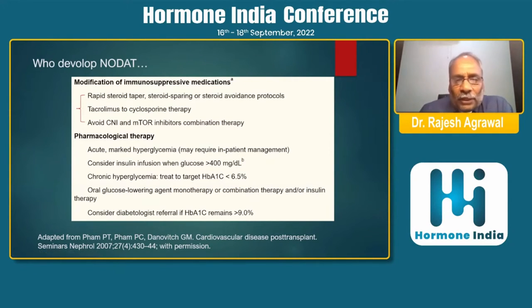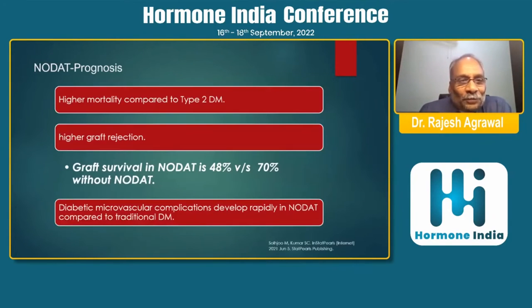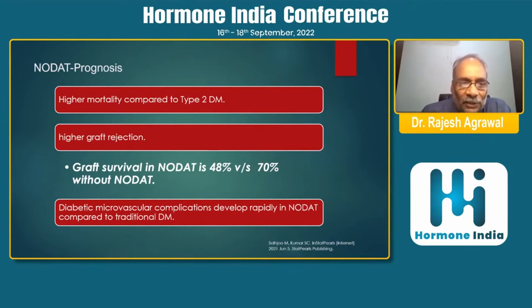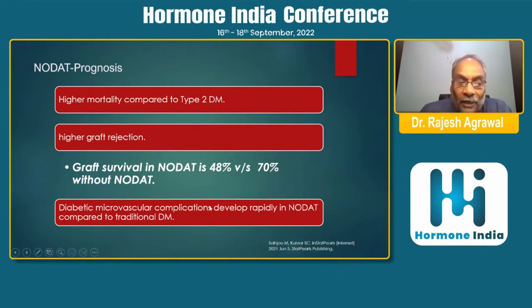The rest of the management of diabetes is as per standard protocol; we will not go into the details as those topics are being covered. NODAT prognosis is associated with higher mortality compared to type 2 diabetes, higher graft rejection, and graft survival in NODAT is 48% versus 70% in patients without NODAT. Diabetic microvascular complications also develop very rapidly in new onset diabetes as compared to classical diabetes mellitus.